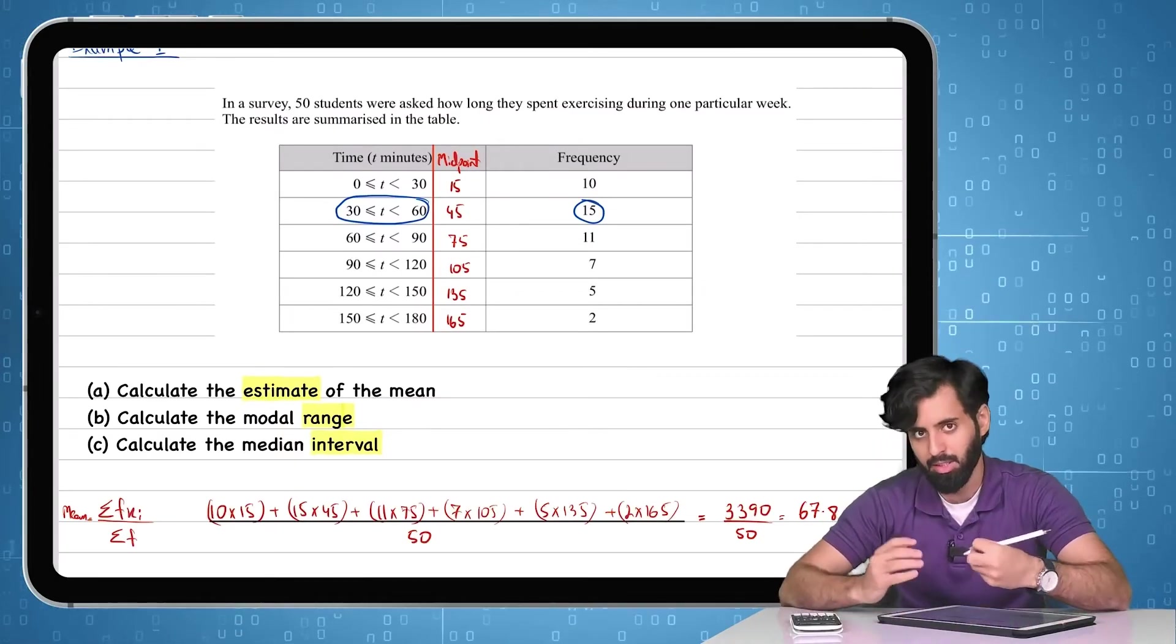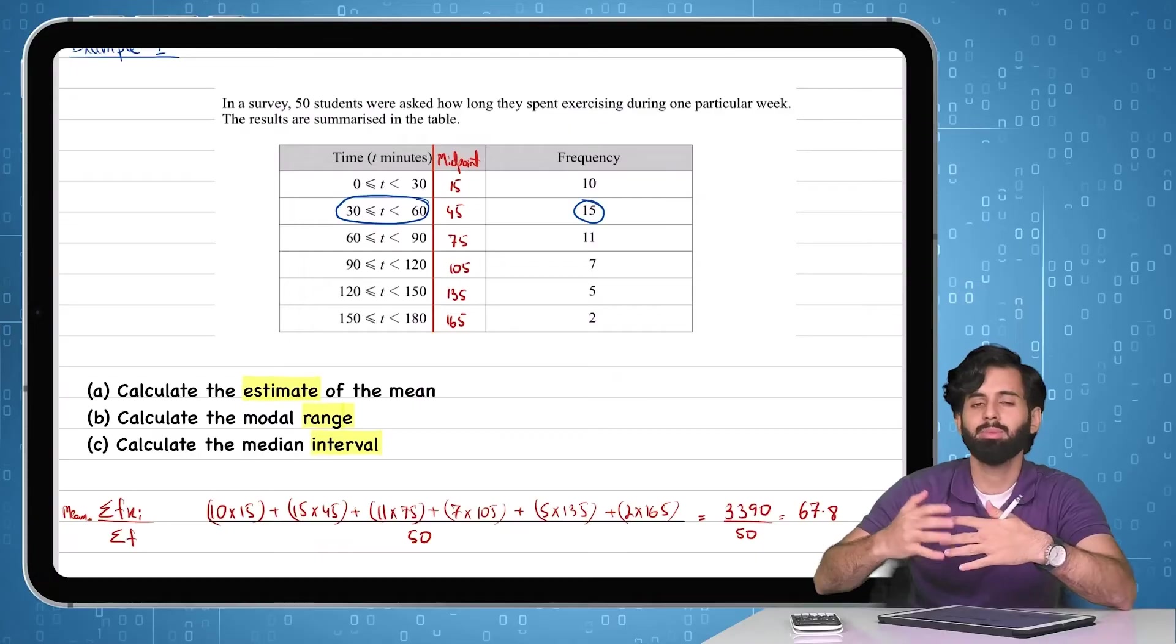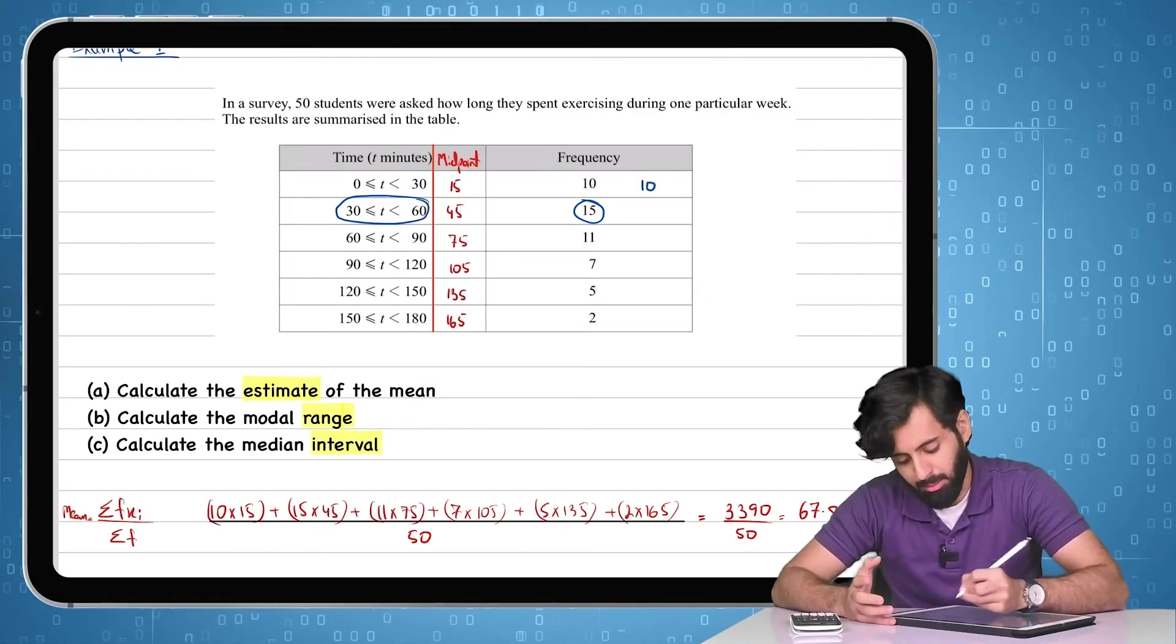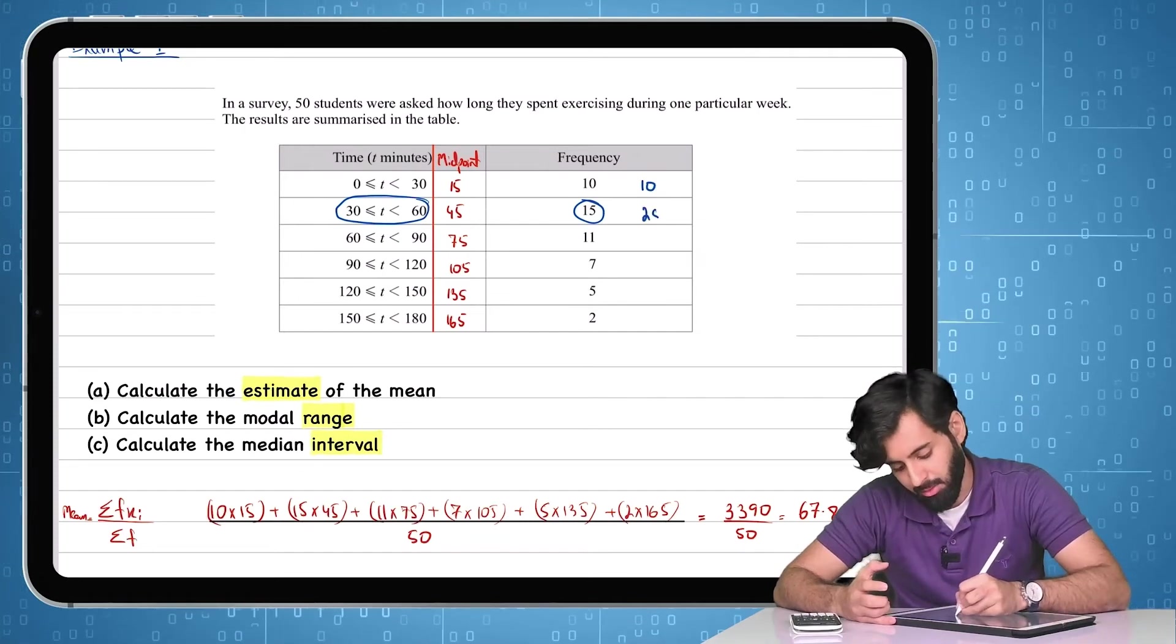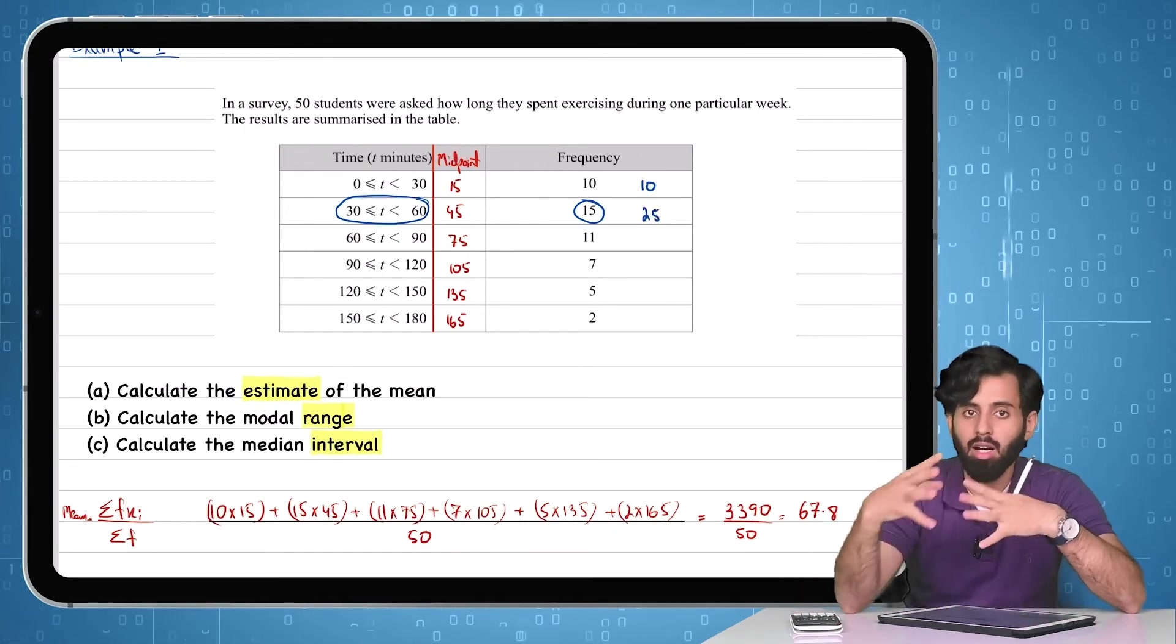And I'll start summing up the frequency. In other words, I'm going to start calculating the cumulative frequency. Now that's something that we're going to study later on. But I'll start summing up the frequency. So up till here, I have 10, and then 10 plus 15 is going to be 25.